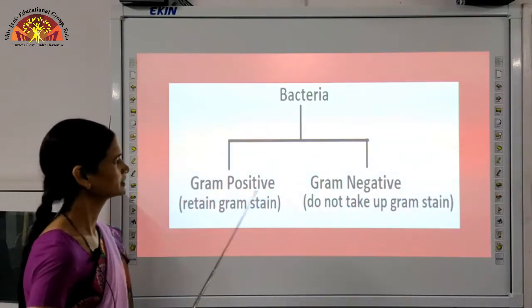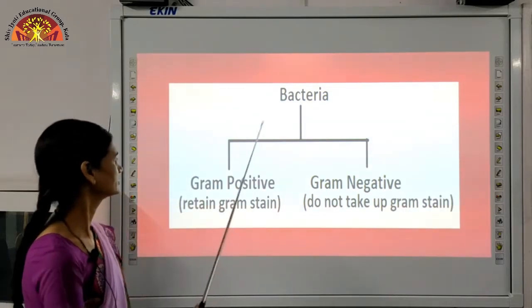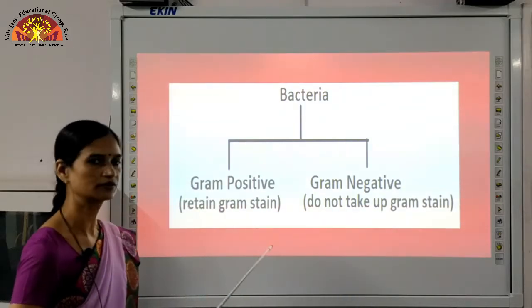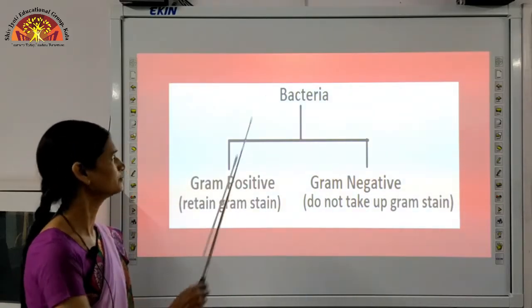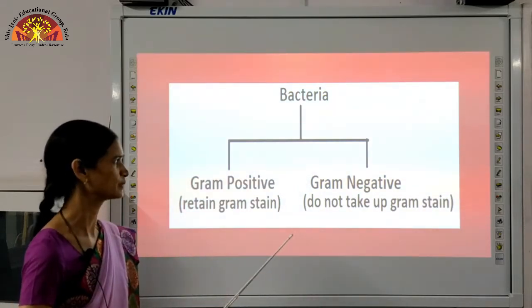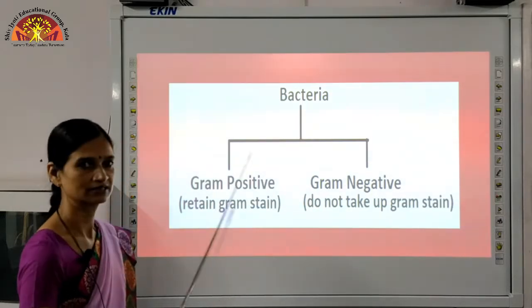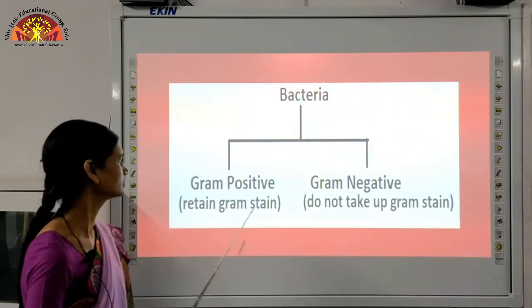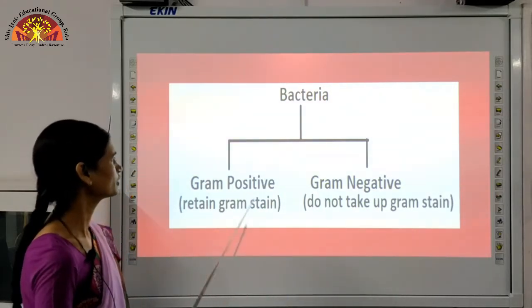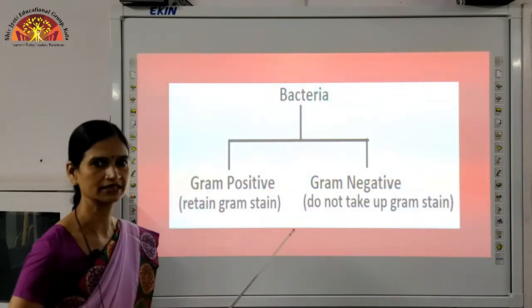Some bacteria absorb gram stain. Those bacteria that retain gram stain are called gram-positive bacteria. Those that do not take up gram stain are called gram-negative bacteria. So there are two types of bacteria depending on whether they absorb the stain or not.